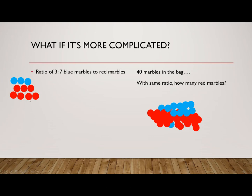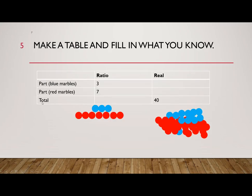I could keep making more groups with 3 blue and 7 red marbles then counting, but math is about shortcuts. What do I need to know to answer this question? Let's make a table to show these relationships.